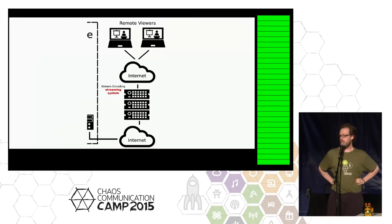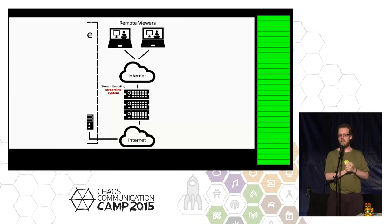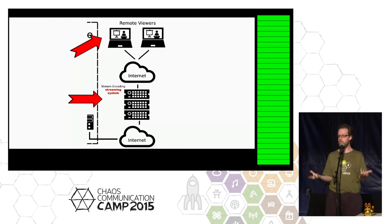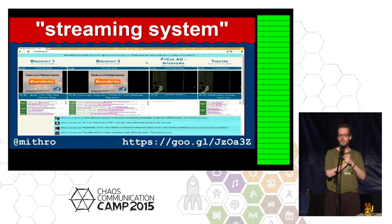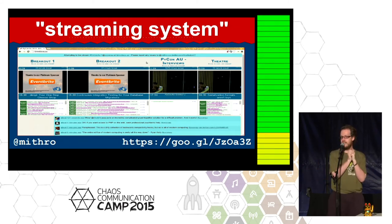You also need to do encoding because on the cloud there's not one supported format. And you also need a website. This is kind of the streaming system and where it sits. We have basically an open source one of those — this is kind of what it looks like. We would really love a graphics designer to come and make it look less ugly.